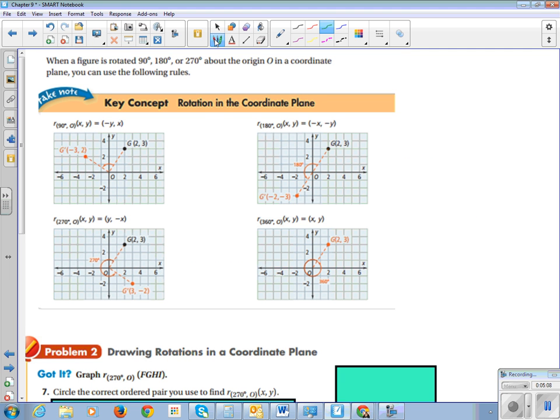Alright, so with our highlighters out, there is actually a rule for rotation of 90, 180, and 270 about the origin. So when you have a 90 degree rotation about the origin, you take the X and the Y coordinates, and you switch them, and then you put a negative sign on the first coordinate.